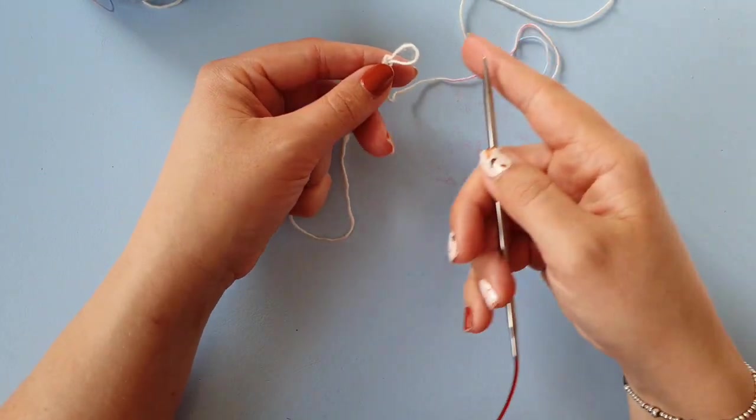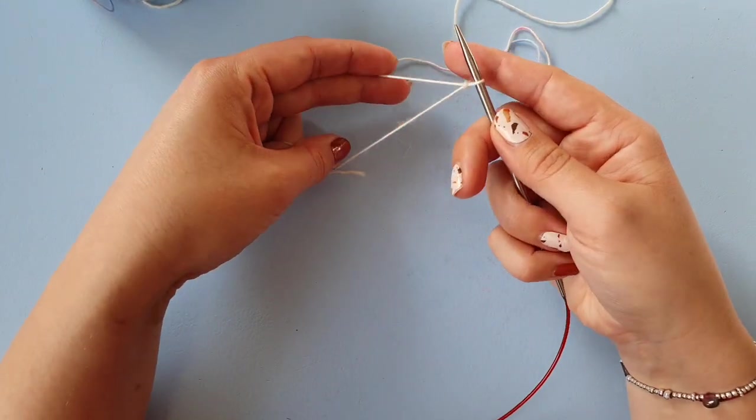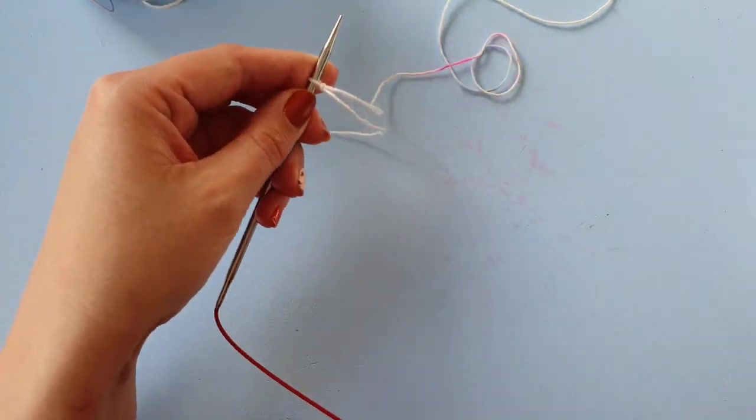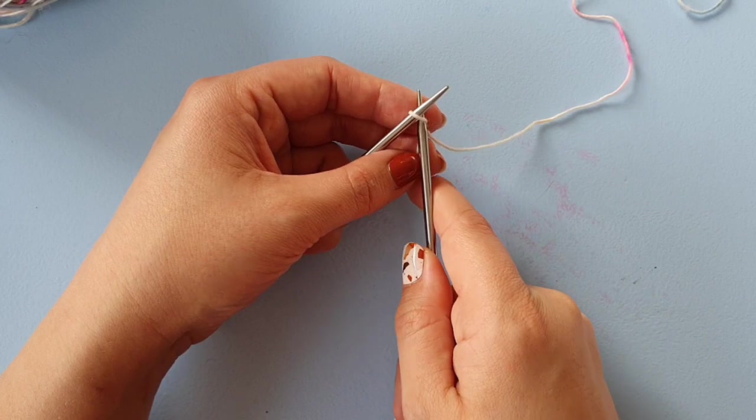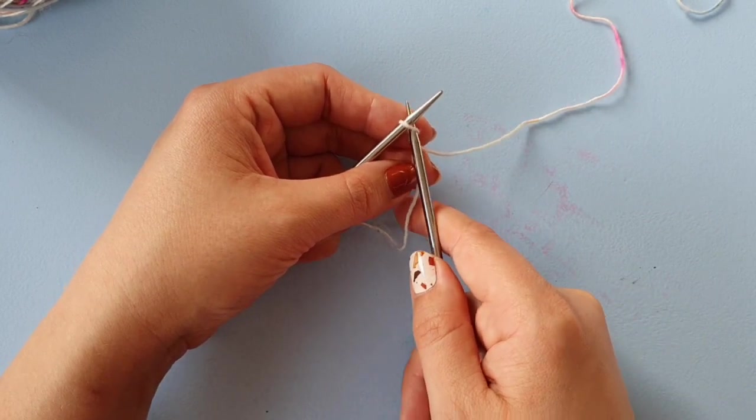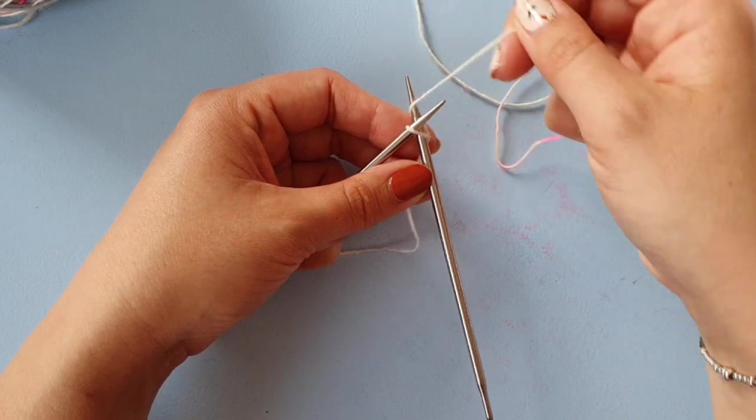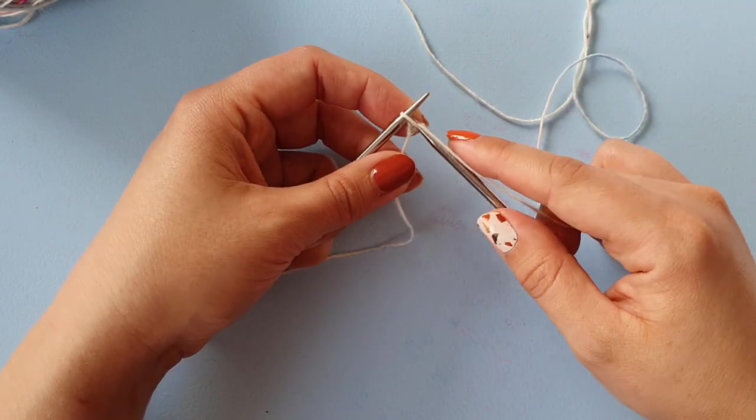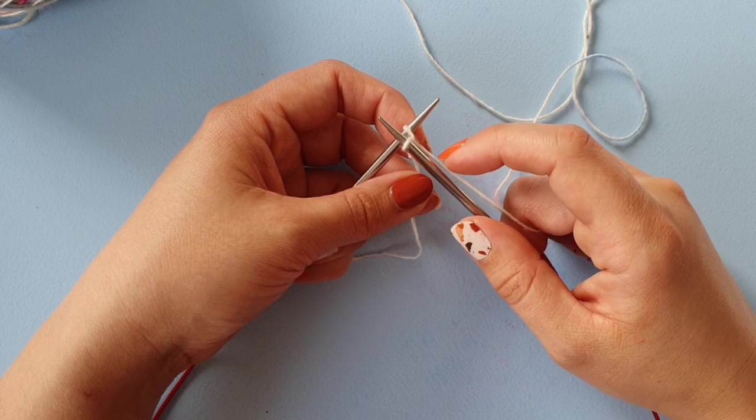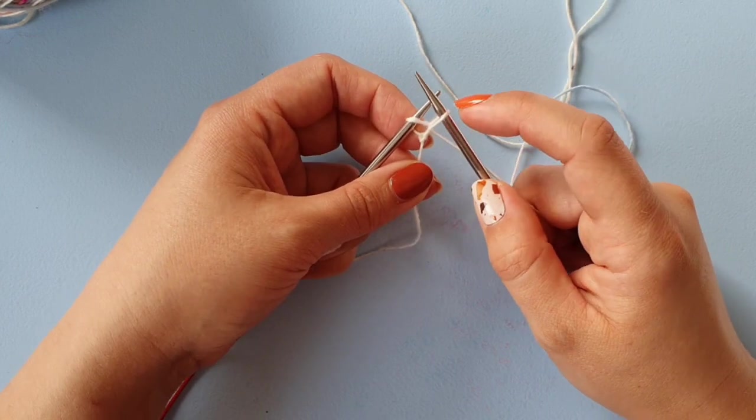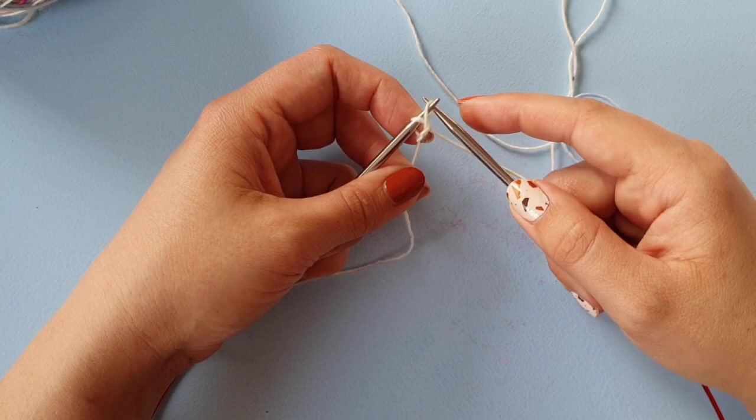So you make a slipknot and put it on your needle, then insert your needle into this stitch as if to knit. You put the yarn round, pull up a loop, but you don't slide the loop off your needle; instead, you put the new loop back on.